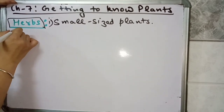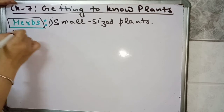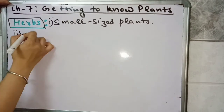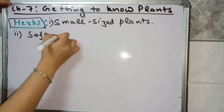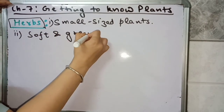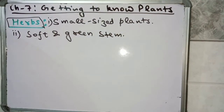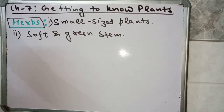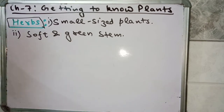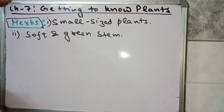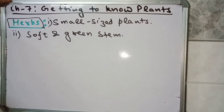Next we will talk about its stem. The stem of a herb plant is soft and green. Herb plants have a soft and green stem, and it is easily breakable also — it can easily be broken.